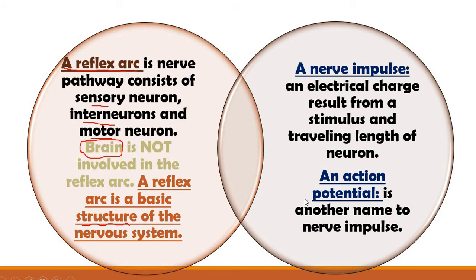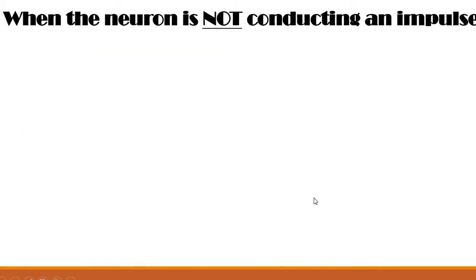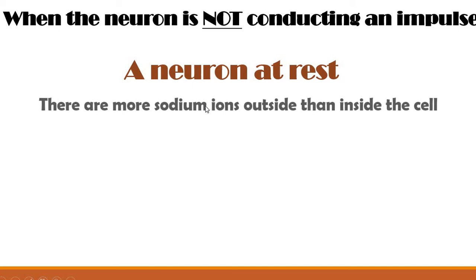Nerve impulse has another name, which is action potential. What helps the action potential to work out or to start? The action potential needs the minimum threshold to work. But at the beginning, when the neuron is not conducting any impulse, it is called a resting neuron or a neuron at rest.